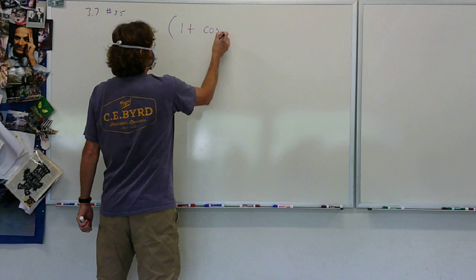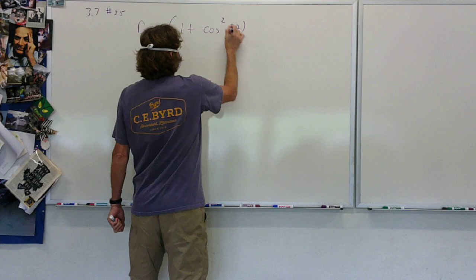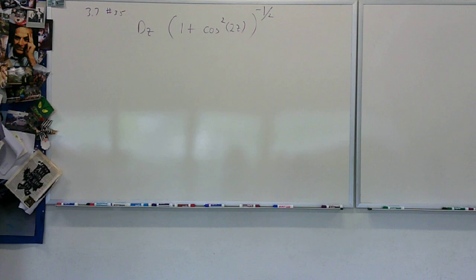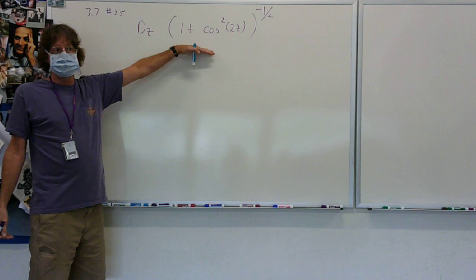Okay, 1 plus cosine squared 2Z, and that's all to the negative 1 half. That makes the problem a lot easier, but the only reason you can use this shortcut is because we are looking at just having a constant in the numerator. So you bring the negative 1 half to the front. Is everyone okay with the algebra to get here?